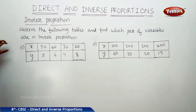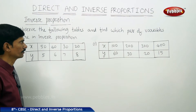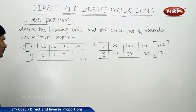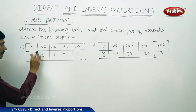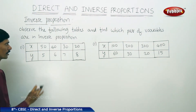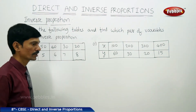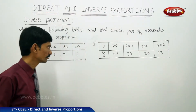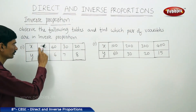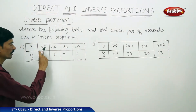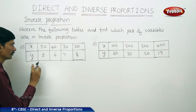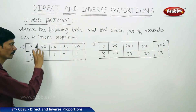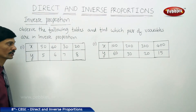Let us solve a problem. Observe the following tables and find which pair of variables are in inverse proportion. To check whether two quantities are in inverse proportion, we find the product of the two quantities in each case. If the product remains a constant, then the two quantities are said to be in inverse proportion.